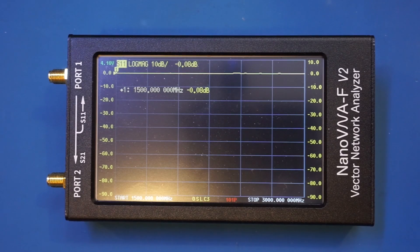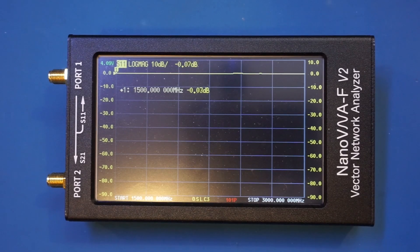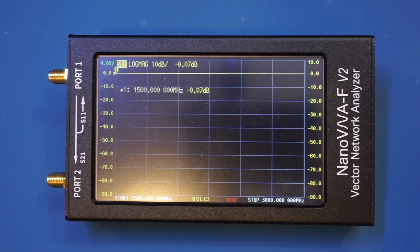Usually, the resolution bandwidth doesn't affect frequency measurement that dramatically. But in this case, it was probably because the output from the signal generator was a square wave instead of sinusoidal, so the error became very pronounced. Let me do a quick demonstration.